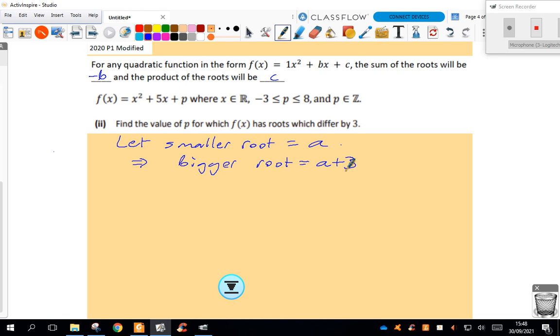I know the sum of the roots, which would be a plus a plus 3, has to be equal to the opposite of 5, negative 5.